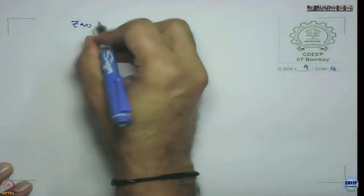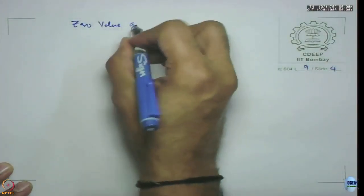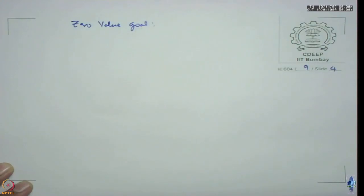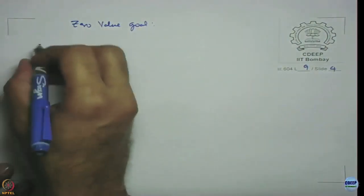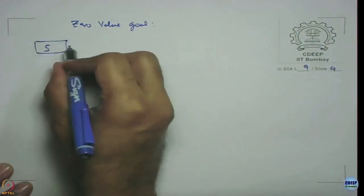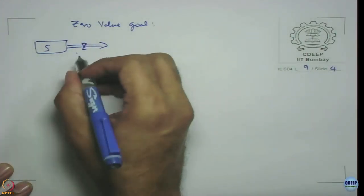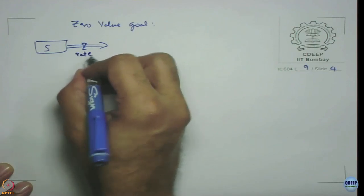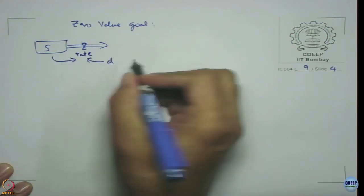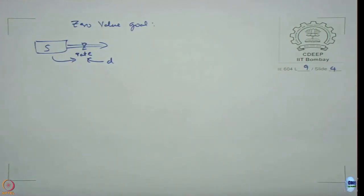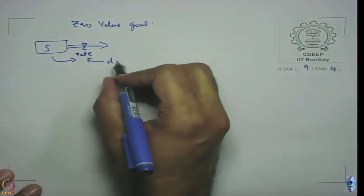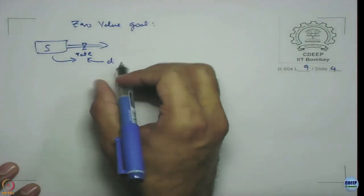Let us quickly check that out. Zero value goal, what we want to do is we have stock S and a rate with fractional adjustment or decay rate D. Let us call it decay fraction D.